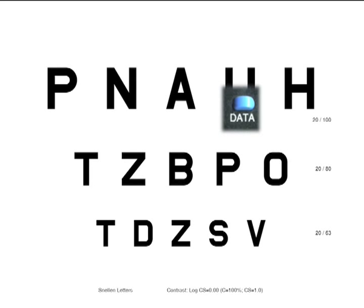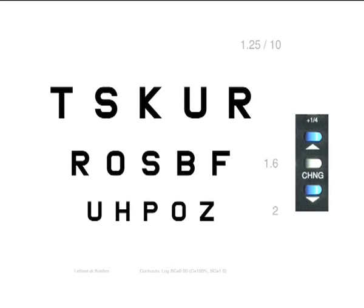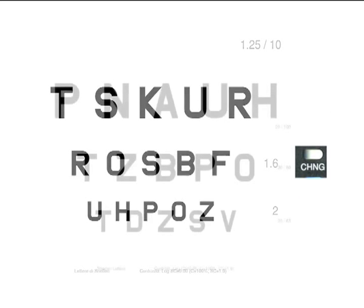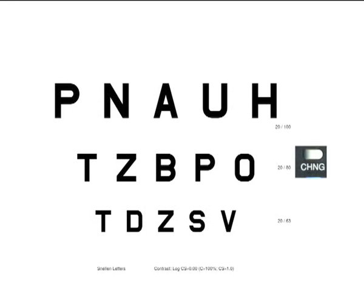All eye chart tests have the same functions. The up and down keys allow to increase or decrease the visual acuity value. The change key allows to choose in a pseudo-random way other stimuli to display.